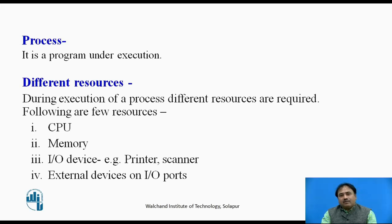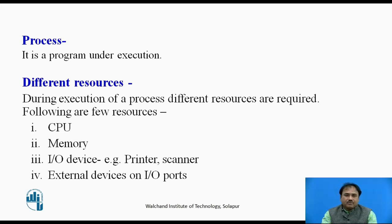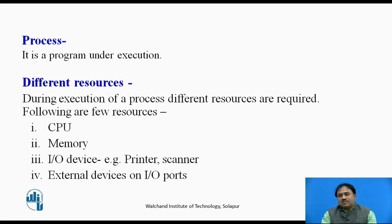The following are some resources that may be required by a process for execution: first is the CPU, then memory, IO devices such as printers and scanners, and external devices connected to IO ports. Out of these resources, some are shareable and some are non-shareable.